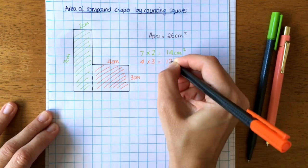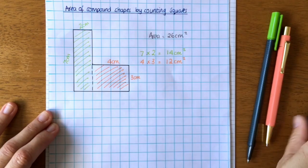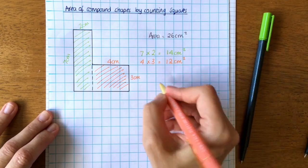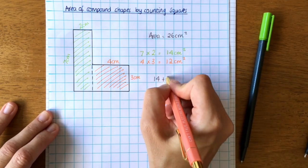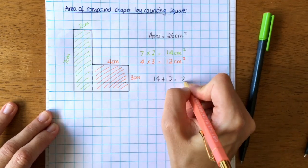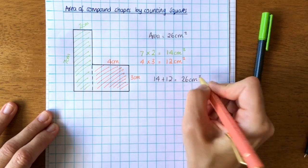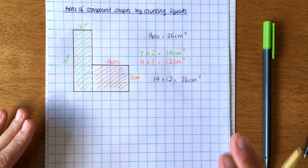And to work out the total area, I would add those two together. So 14 add my 12 equals 26 centimeters squared, which is what it is when I've counted them.